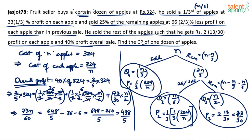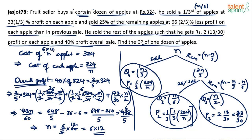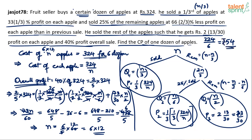73 goes into 438 six times (since 73×6 = 438), so n/60 = 6/5, giving n = 6/5 × 60 = 72. So 72 apples were bought, which is 6 dozens. Since 324 rupees was paid for 6 dozens, the cost price for one dozen of apples is 324 divided by 6, which equals 54 rupees per dozen. So 54 rupees is the final answer.